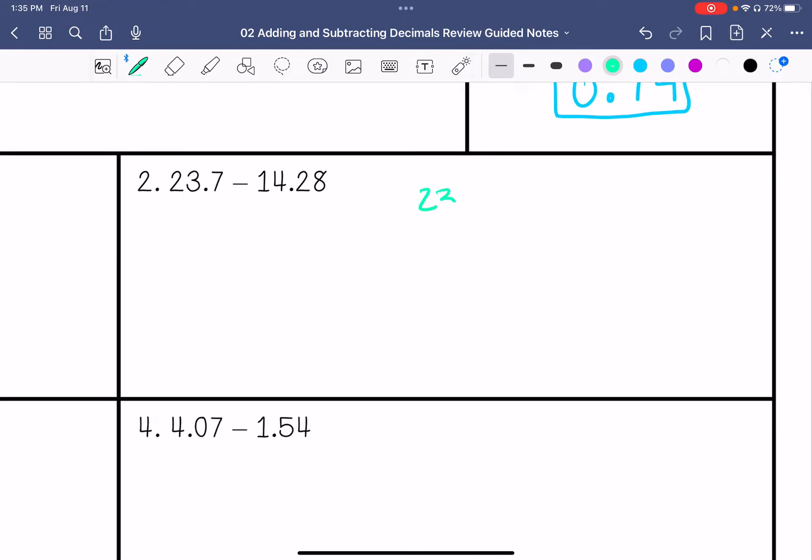We're going to do 23.7 minus 14.28. Add that placeholder. We're going to borrow. 10 minus 8 is 2, 6 minus 2 is 4. We are going to borrow again. 13 minus 4 is 9, and then 1 minus 1 is 0. So my answer is 9.42.